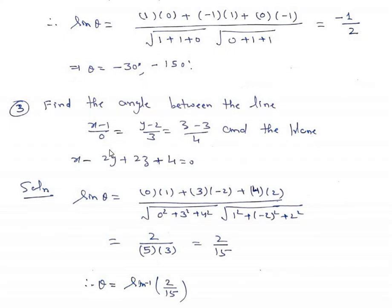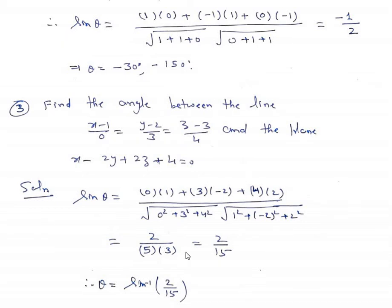Third example: find the angle between the line x minus 1 upon 0 equals y minus 2 upon 3 equals z minus 3 upon 4 and the plane x minus 2y plus 2z plus 4 equals 0. Here L, M, N are 0, 3, 4 and A, B, C are 1, minus 2, 2. Applying the formula: sine theta equals (0×1 plus 3×(minus 2) plus 4×2) upon (sqrt(0 plus 9 plus 16) times sqrt(1 plus 4 plus 4)), giving 2 upon 15. So theta equals sine inverse of 2 upon 15. Thank you so much.